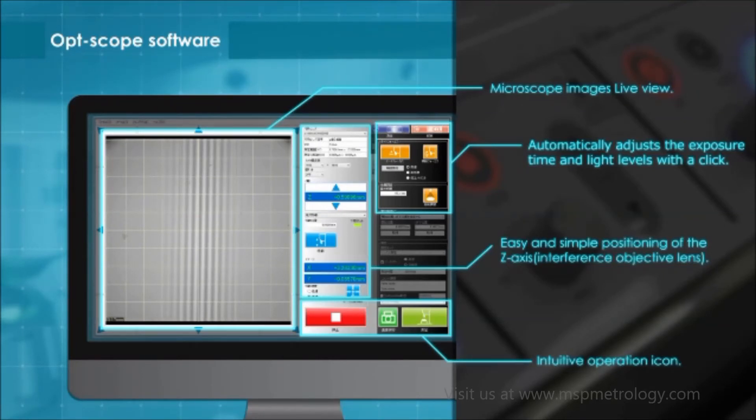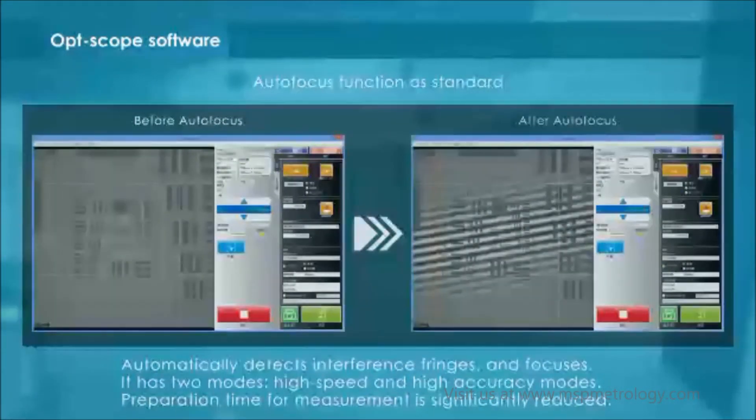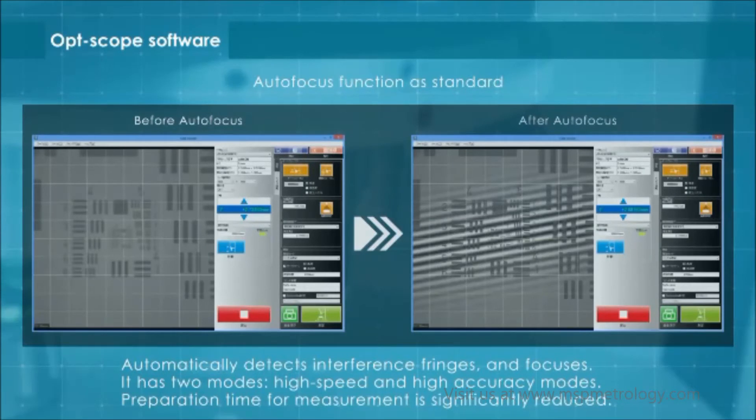For a more intuitive interface, the image displaying area and buttons are large in size. This Optscope software comes standard with an autofocus function, which automatically detects interference fringes and focuses. It has two modes: high-speed and high-accuracy modes. Preparation time for measurement is significantly reduced.